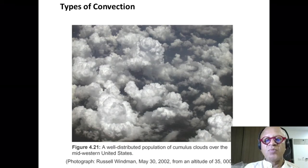You can get a sense here. This is a well-distributed population of cumulus clouds over Midwestern U.S. The U.S. is a very vast continent. From East Coast to West Coast, it's almost like going from the East Coast to Europe. This Midwest is right in the middle, more to the West.